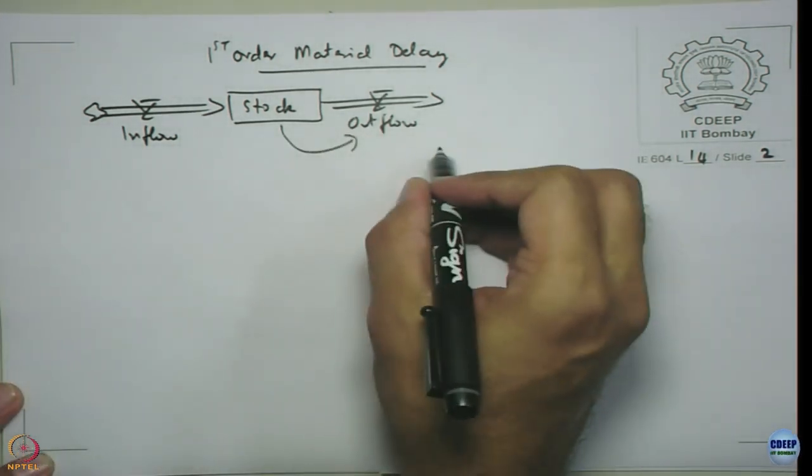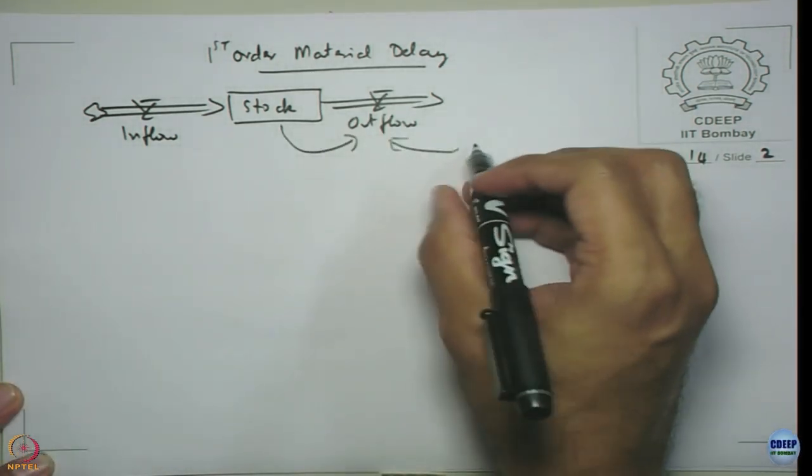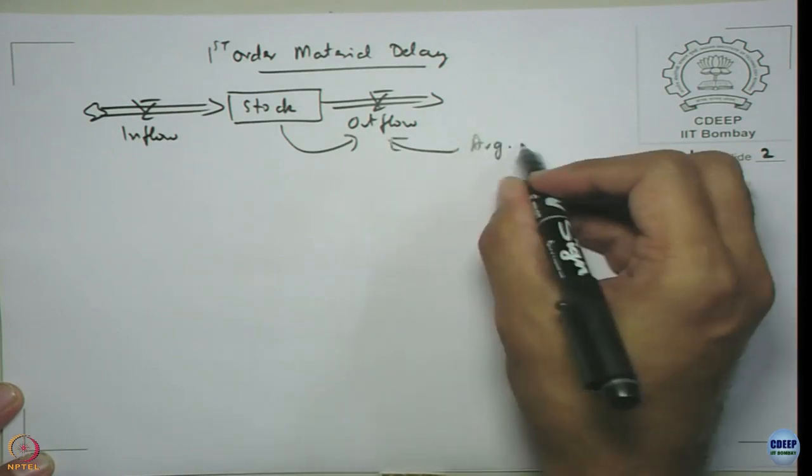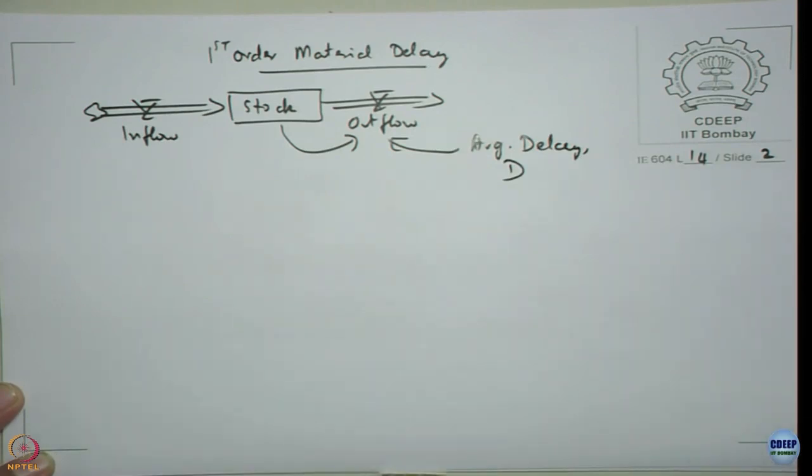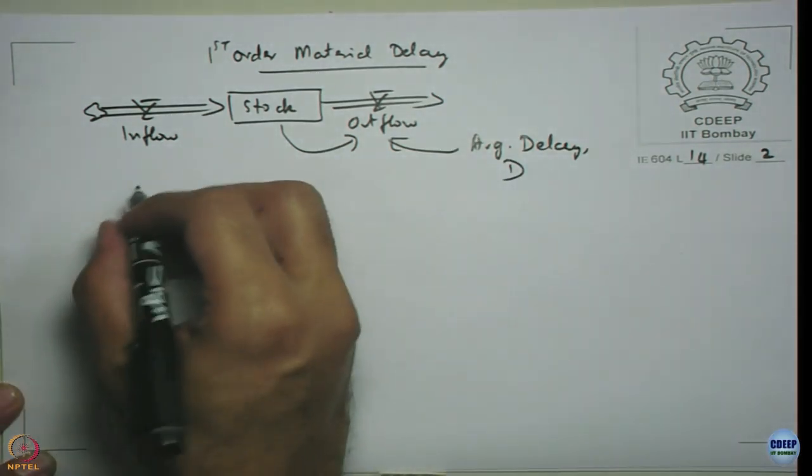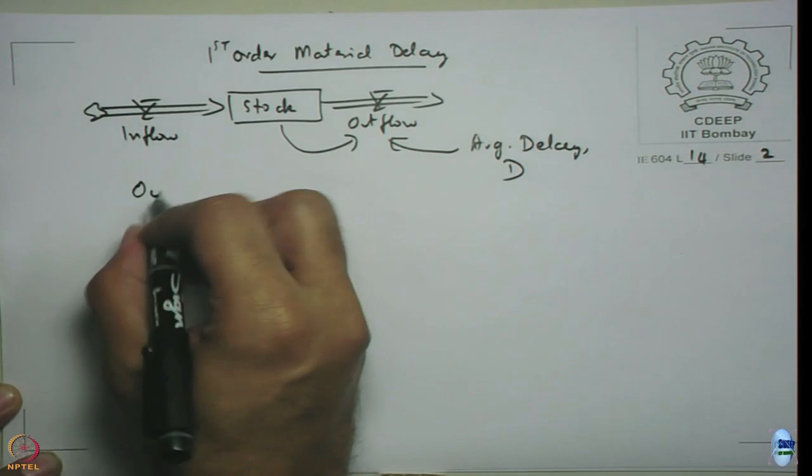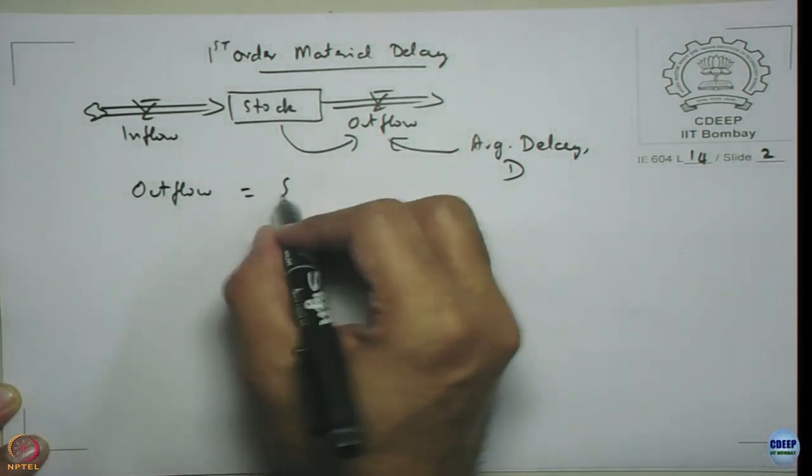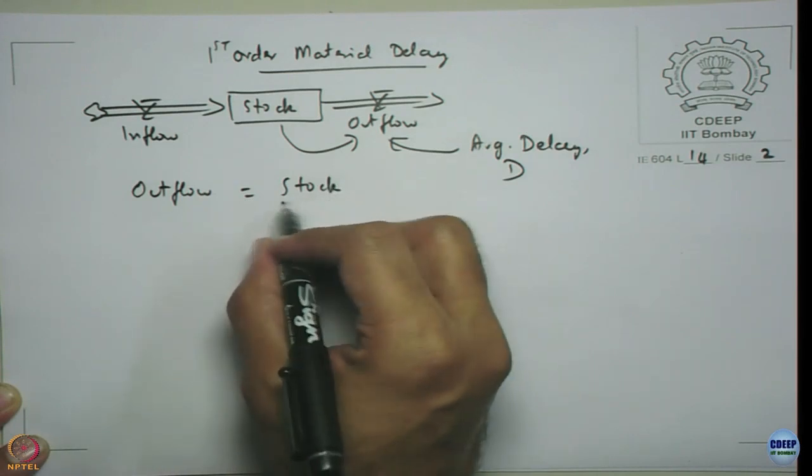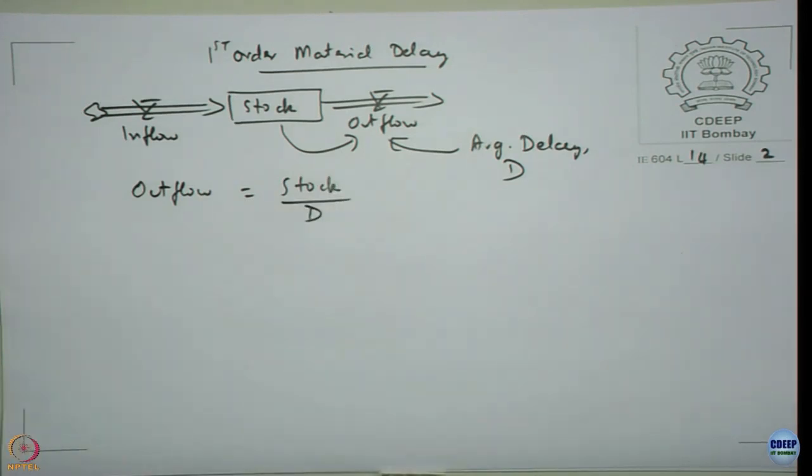We are going to model it like this, where average delay D is here. So here the system is outflow is nothing but your stock divided by D.